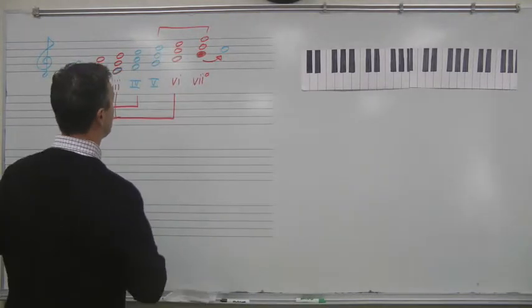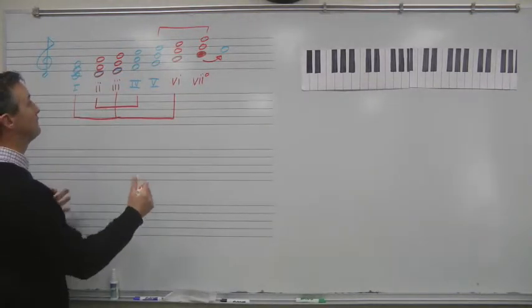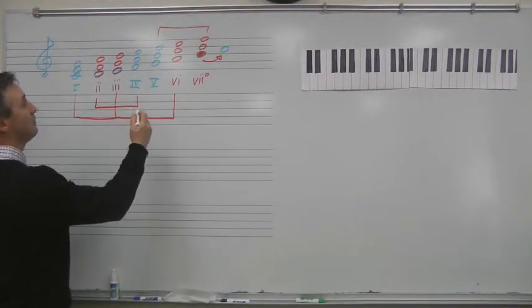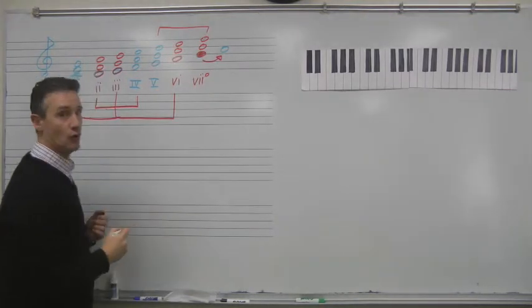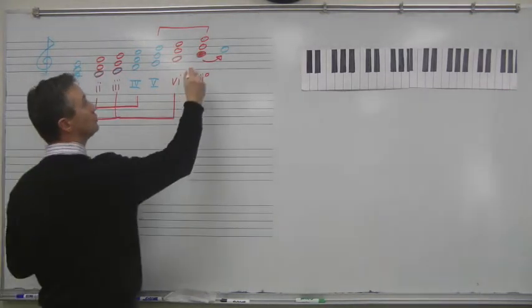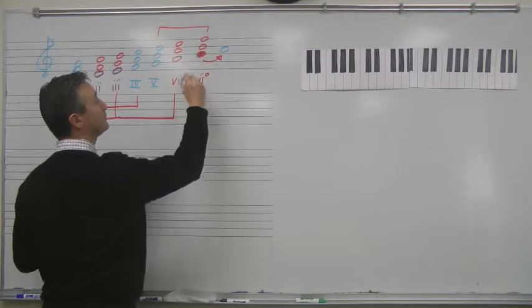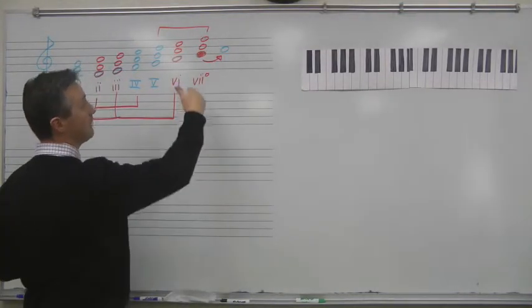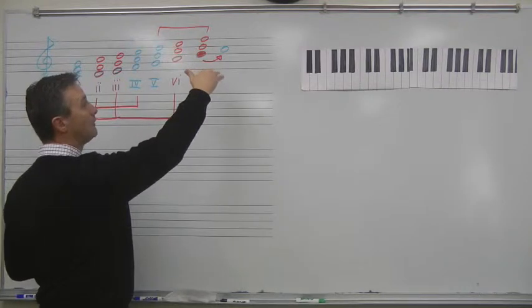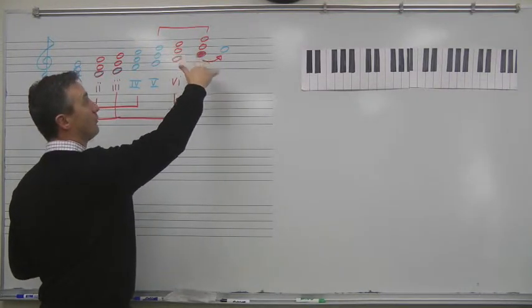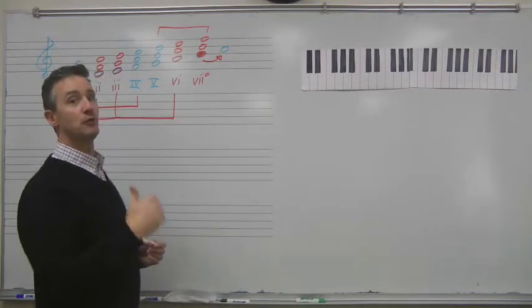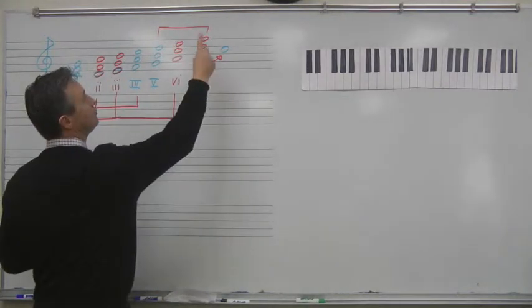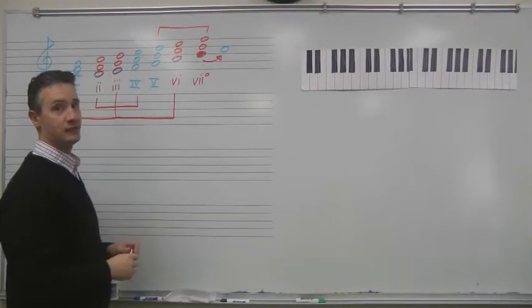So, if you have a chord that you want to voice that has the leading tone in it, like the 7 chord, you would not usually double the root, because the root is the leading tone. You would have one root, and then you might have two thirds and one fifth, or one root, one third, and two fifths.